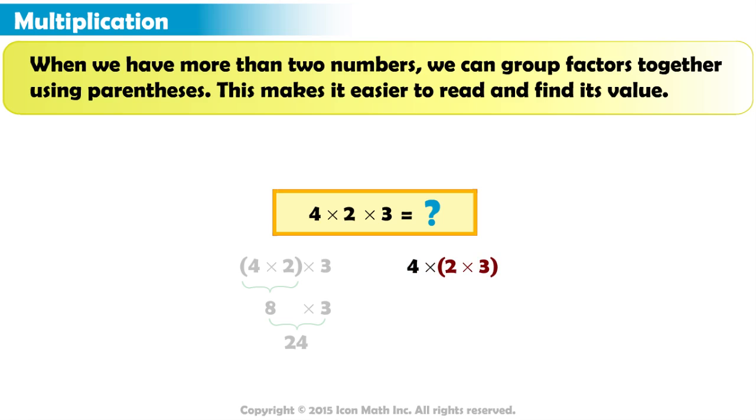Start with the numbers inside parentheses. Two times three equals six. Now we have two numbers to multiply. Four times six equals twenty-four. We got the same answer.